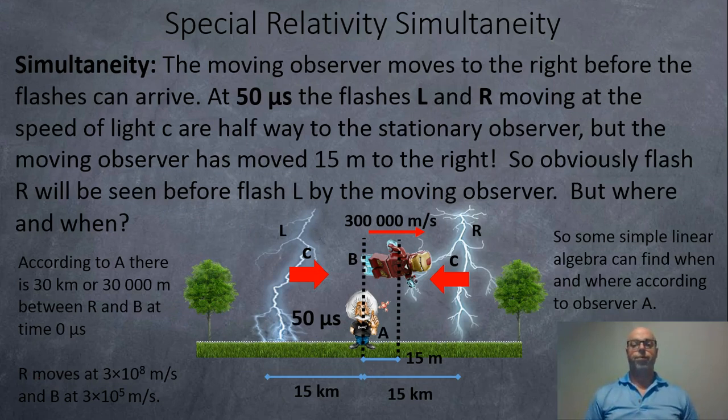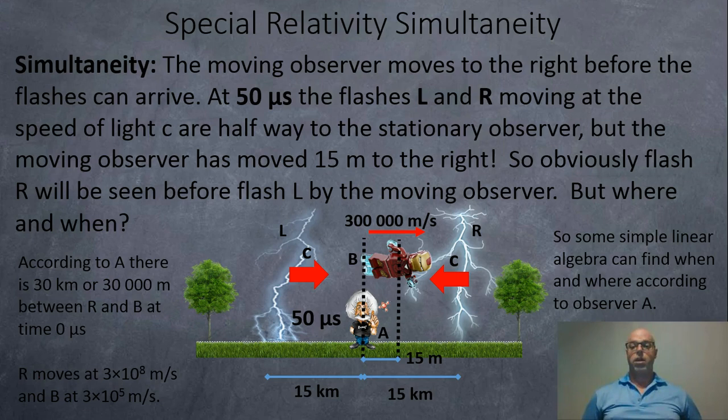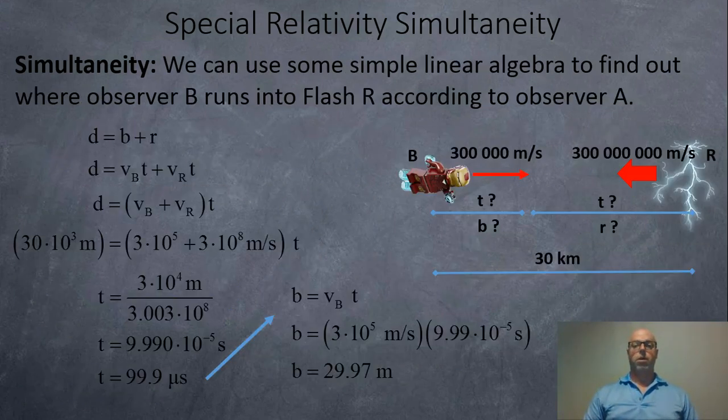50 microseconds later, the lightning blast flashes are halfway from the trees to the observer A, and observer B has moved approximately 15 meters to the right at this point in time. So using a little bit of linear algebra, we can just find out where this would occur.